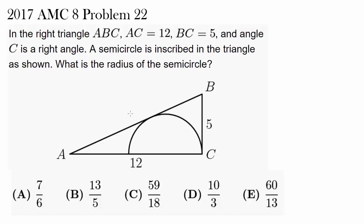This question is 2017 AMC 8 problem 22. In the right triangle ABC, AC equals 12, BC equals 5,